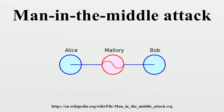Mallory replaces Bob's key with her own and relays it to Alice, claiming that it is Bob's key. Alice receives Mallory's key, believing it to be Bob's.